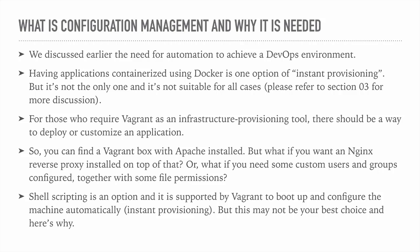For those who require Vagrant as an infrastructure provisioning tool, there should be a way to deploy or customize an application. In Docker, you abstract the application, install a container, and the container launches the application — it is immediately ready to use. With Vagrant, some machines come pre-bundled with their applications. For example, you can download a Vagrant machine that has Apache and PHP already installed. But what about further configuration — like needing a specific version of PHP, custom Apache settings, enabling mod_rewrite, changing the port Apache runs on, or changing the document root directory?